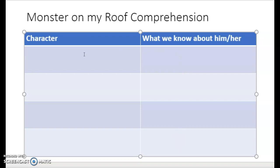The first character we know is Billy. We know that Billy is afraid of a monster — that's one thing we know about him. We also know that he's a boy, we know where his bedroom is, and we know that he has a mom. Those are all things you can write in your graphic organizer. I did the first character with you and the first detail — you need to come up with one more detail for him.